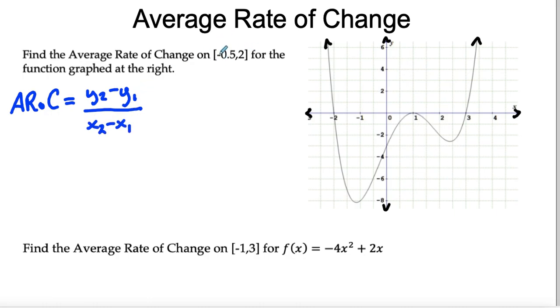In this problem, your x1 and x2 are given here, because we're saying the interval from negative 0.5 to 2, how much is y changing? So if I go here now over to my graph, that's how I'm going to find out my y values.